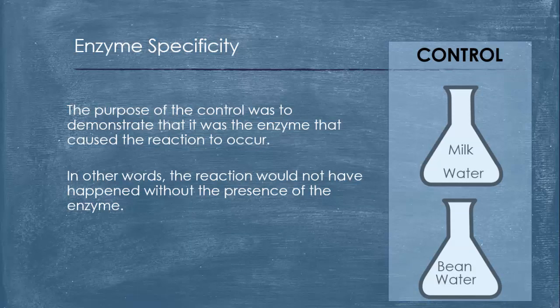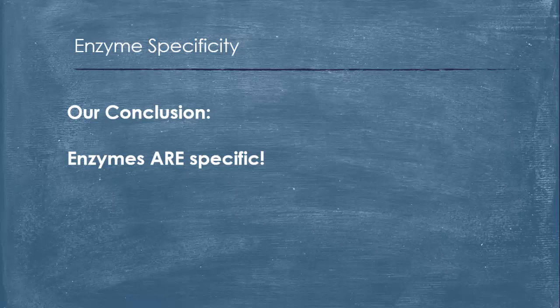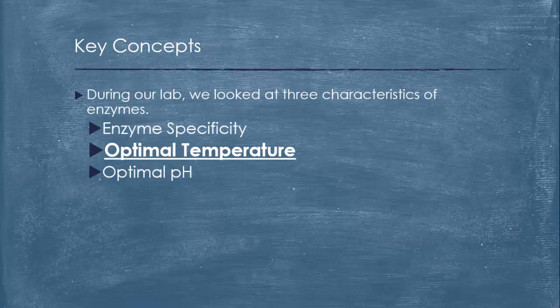Then we had our controls. The purpose of the control was to demonstrate that it was the enzyme that caused the reaction to occur. In other words, the reaction would not have happened without the presence of the enzyme. Without the controls, we wouldn't have been able to state that. Our conclusion: the enzymes are specific. Lactase worked only with milk and beano worked only with bean sugar.